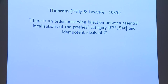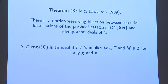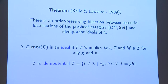Here's a theorem of Kelly and Lawvere giving an interesting duality: there's an order-preserving bijection between essential localizations of the pre-sheaf category and idempotent ideals of C. This is a theorem I did quite a few generalizations of in my thesis. An ideal is just a collection of morphisms closed not only under pre-composition but also post-composition — exactly like the smallest covering sieve. Idempotent means that you can take an element of your ideal and split it into two different elements, essentially saying that the ideal composed with itself equals itself.